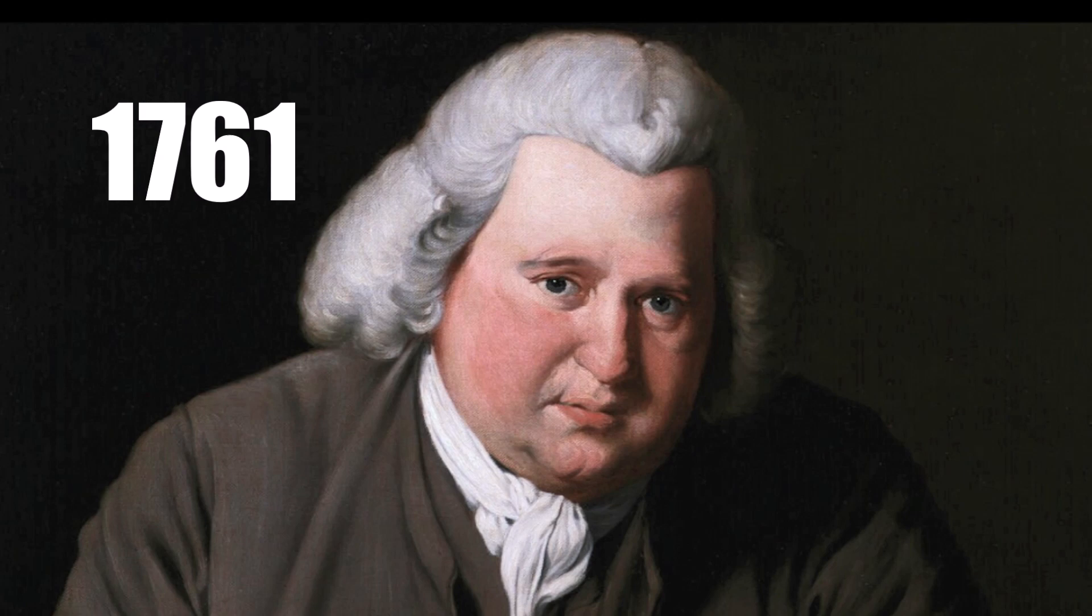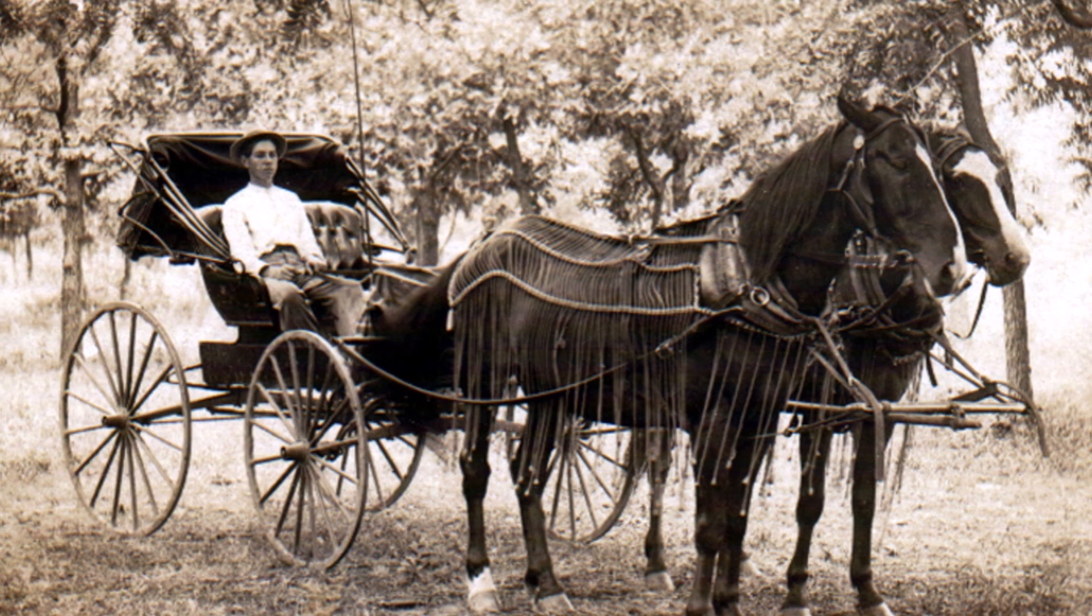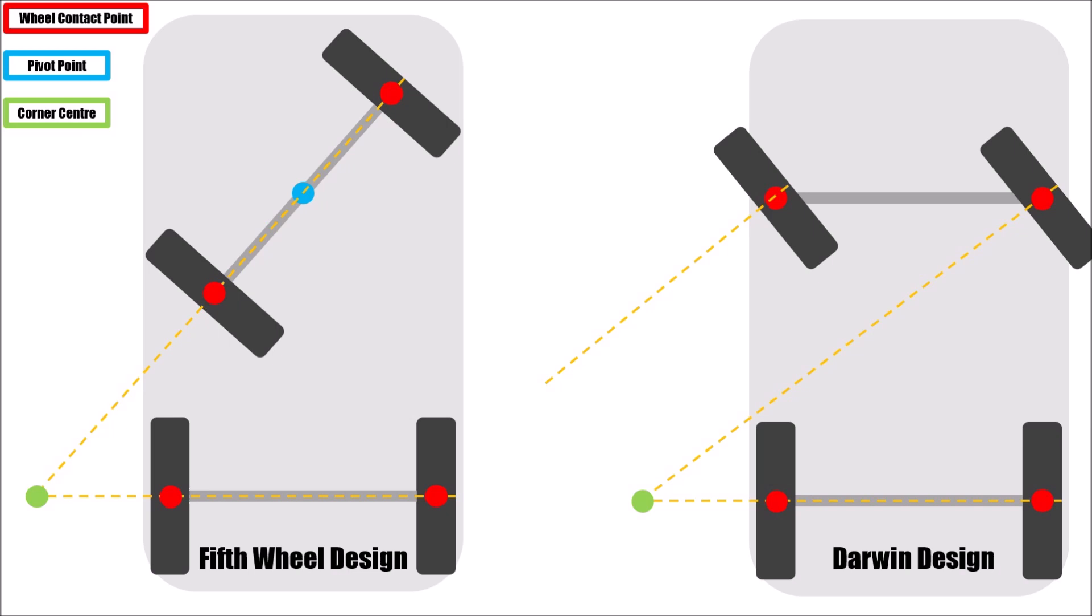In 1761 Darwin designed a steering where the front wheels stayed at their position, but the wheel turns on the spot. He built a carriage like this and tested it on his daily trips. The carriage was much safer and more stable.